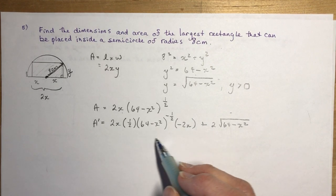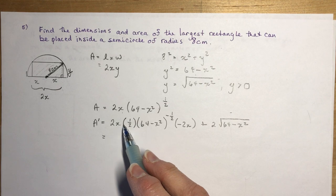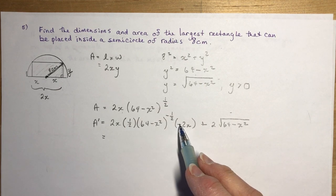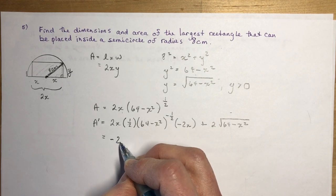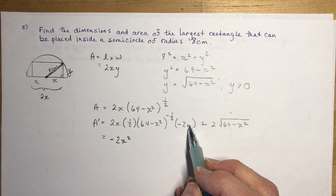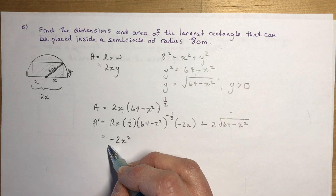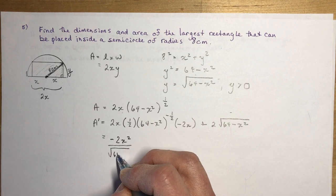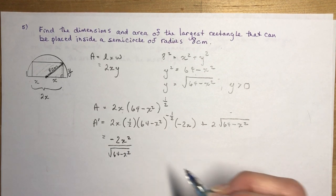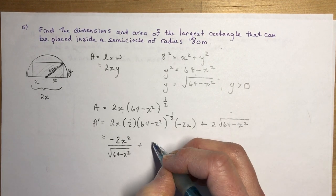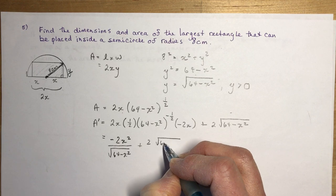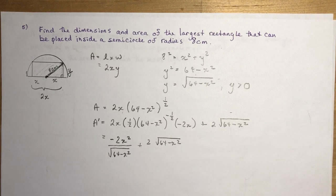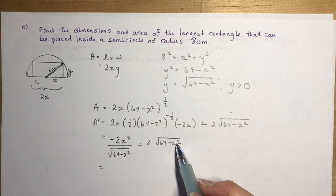Plus the second times the derivative of the first: (64 − x²)^(1/2) · 2. Simplifying the first term: 2x · (1/2) = x, times −2x gives −2x². So the full derivative is A′ = −2x² / √(64 − x²) + 2√(64 − x²).